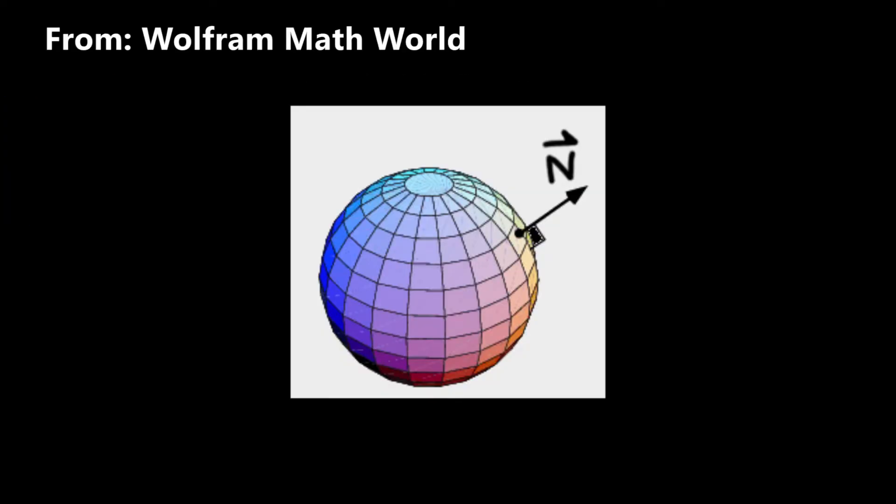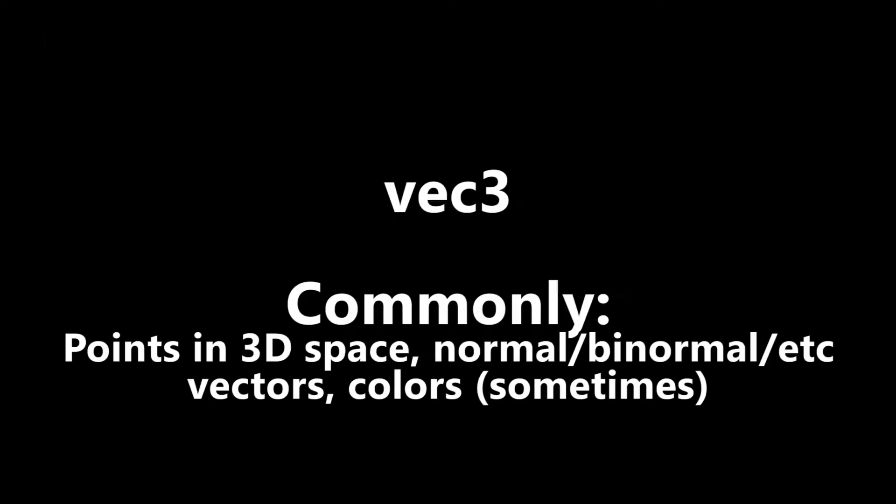The normal of a surface is just the vector that points perpendicularly outwards from the surface. But if you've never seen a tangent or a bi-tangent or a bi-normal vector, you can imagine that those are just normal vectors that are instead of perpendicular to the surface, they are well, tangent to the surface as the name implies. They come up fairly often when it comes to things like normal mapping.